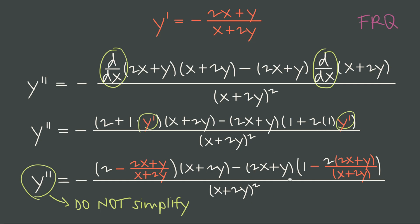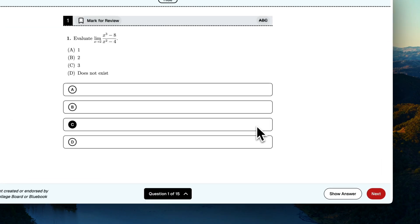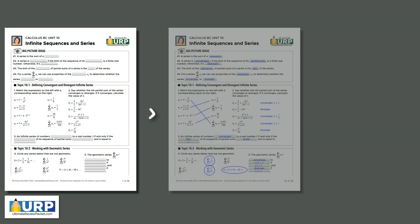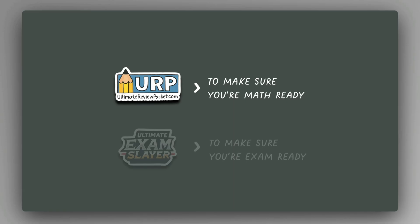If you remember the core habit of multiplying by y prime every time you differentiate something that includes y, that implicit differentiation can be combined with power rule, product rule, and quotient rule, and if you know how to find the derivative at a point, the equation of the tangent line including horizontal and vertical tangents, and the second derivative using implicit differentiation, you'll be very well prepared for the AP exam. Check out the Ultimate Review Packet and Ultimate Exam Slayer below for more help with AP Calculus.